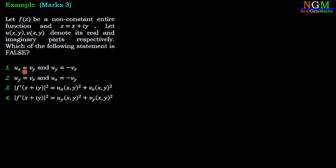The first statement: u_x = v_y and u_y = -v_x. Second statement: u_y = v_x and u_x = -v_y. Third statement: |f'|² = u_x² + v_x². And the fourth statement: |f'|² = u_y² + v_y².